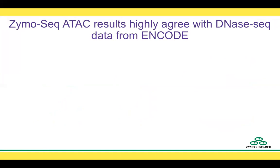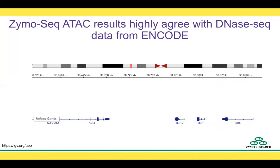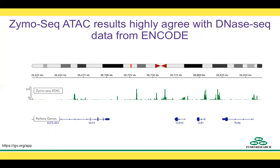We then decided to look at how the data generated with ZymoSeq ATACSeq compares with DNASeq data. DNASeq ENCODE data is available online and represents well-established regions of open chromatin. We uploaded bigwig files from ZymoSeq ATACSeq and ENCODE DNASeq data on the IGV website to compare peaks, then chose a randomly selected region of the human genome. In the top panel, with green peaks, we can see the data obtained in-house with ZymoSeq ATACSeq, and in the bottom, in yellow peaks, the ENCODE DNASeq data. There is complete agreement in the peaks shown for both assays, which further validates the results obtained using ATACSeq.